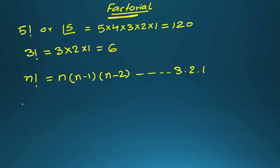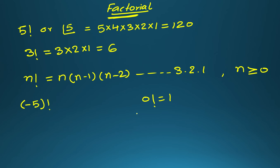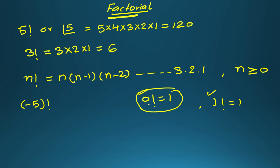You may ask: what if we have the factorial of a negative number? If it is written alone, you cannot find it, because for this definition n must be greater than or equal to 0. Factorial 0 is assumed to be 1 — this is a defined value. Factorial 1 is also equal to 1.